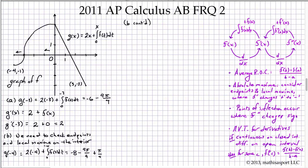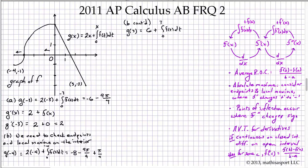We also need g(3): 2 times 3 plus the integral from 0 to 3 of f(t) dt, which equals 6 plus the integral. Looking at the geometric shape, there's a positive signed area and a negative signed area that are exactly symmetrical and of opposite sign through the center at x = 1.5. So this entire integral is a net 0, and g(3) = 6.